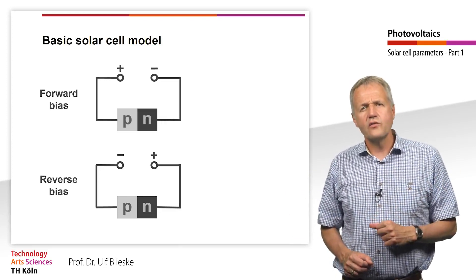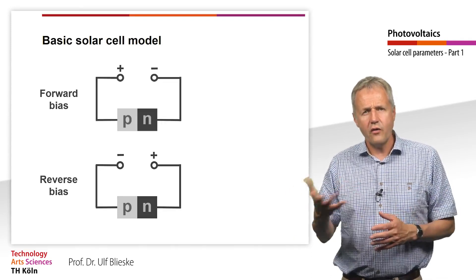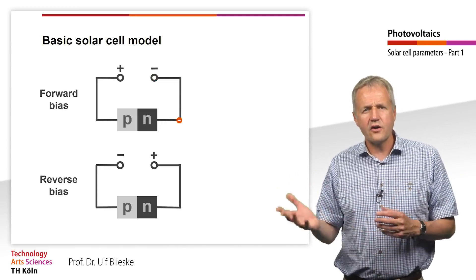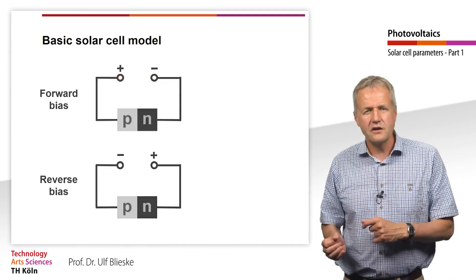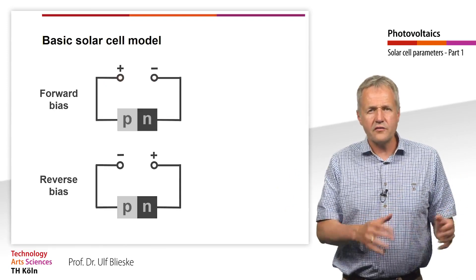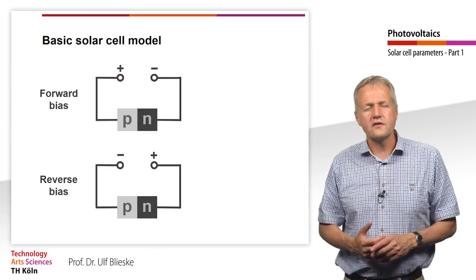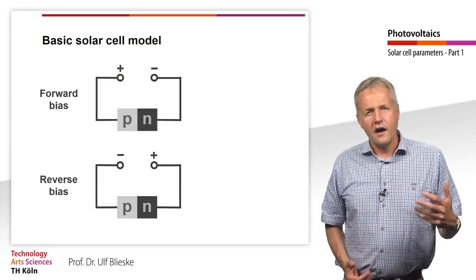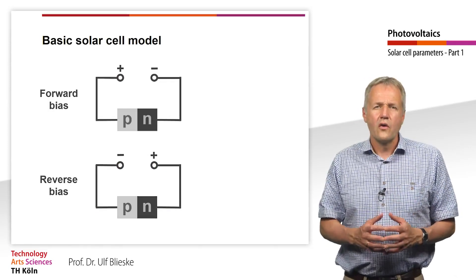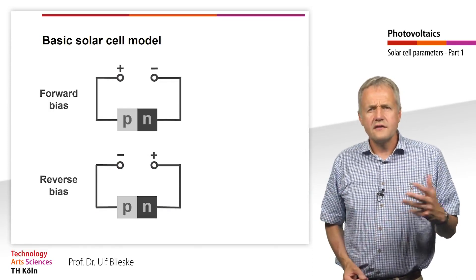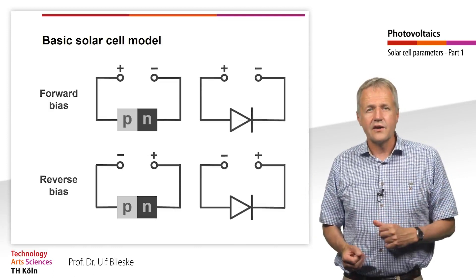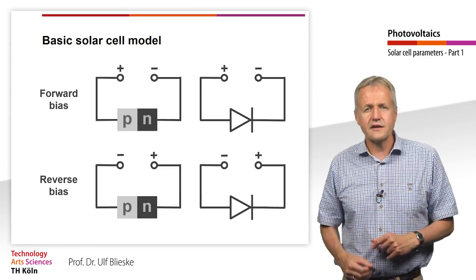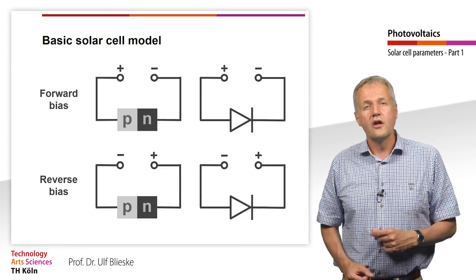In the last unit, we looked at the behavior of a p-n junction under forward and reverse bias. We found that under forward bias a current flows in forward direction through the p-n junction, while under reverse bias a low current flows in reverse direction, the reverse saturation current I0. We also learned that in the dark a solar cell behaves like a diode. We therefore replace the representation of the p-n junction with the electrotechnical symbol of a diode.